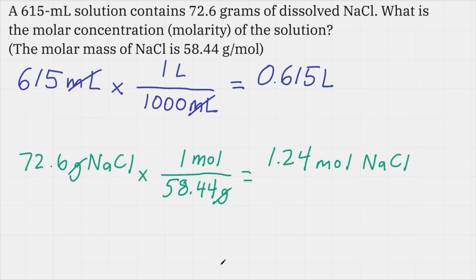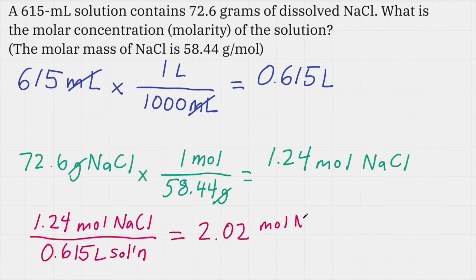Now I know how many moles are dissolved in the solution, and I know the volume in liters, so I can calculate the molarity. Molarity is always a ratio of moles of solute per volume of solution. I'm going to take my mole amount, 1.24 moles of NaCl, and divide by the liter amount, 0.615 liters. That's the volume of the solution. Dividing those numbers gives me 2.02 moles of NaCl per liter of solution. Most often you would just write this as 2.02 capital M. M means molar or molarity.